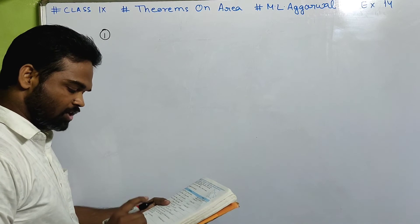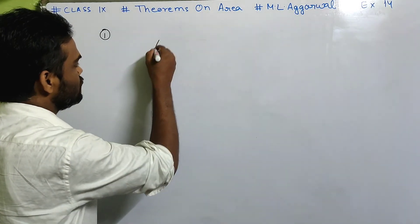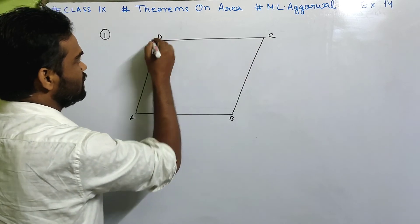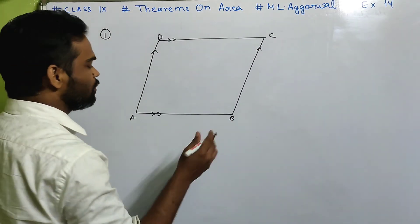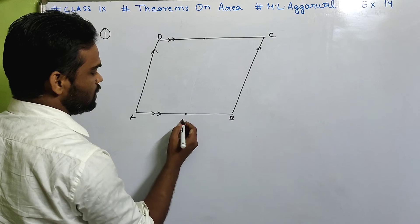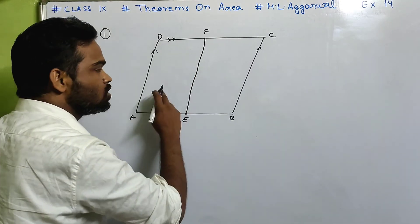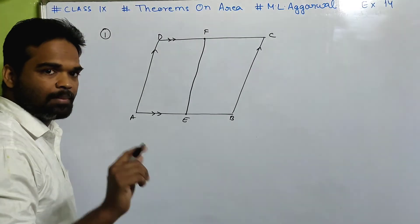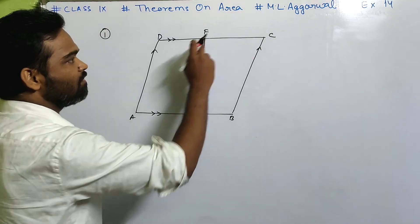Prove that the line segment joining the midpoints of a pair of opposite sides of a parallelogram divides it into two equal parallelograms. You have a parallelogram ABCD where AB is parallel to DC and AD is parallel to BC. We need to prove that if you take one pair of opposite parallel lines and join the midpoint, E being the midpoint of AB and F being the midpoint of DC, when you join them you get two equal parallelograms — equal meaning having the same area. First I need to prove that AEFD and EBCF are parallelograms.